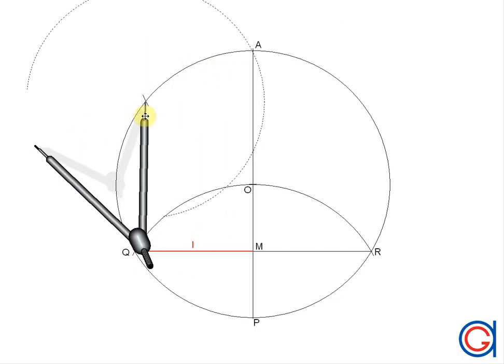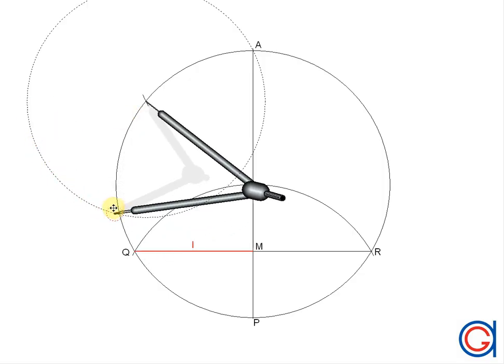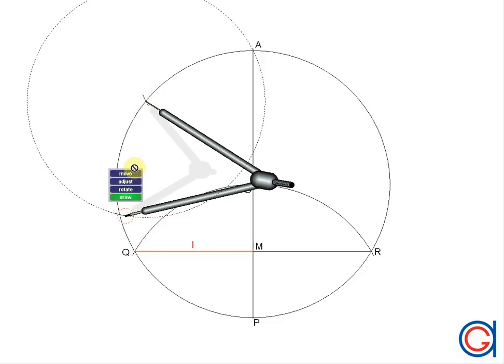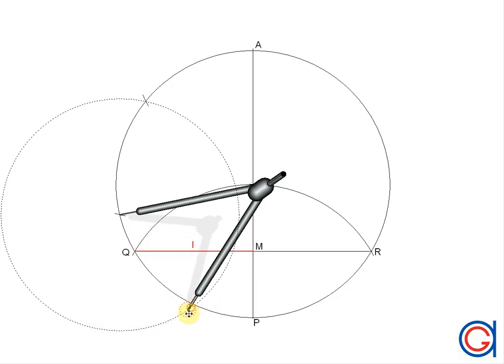Here we have our first arc. Now setting our compass on the previous arc, we scribe our second arc. Here we have our third arc.